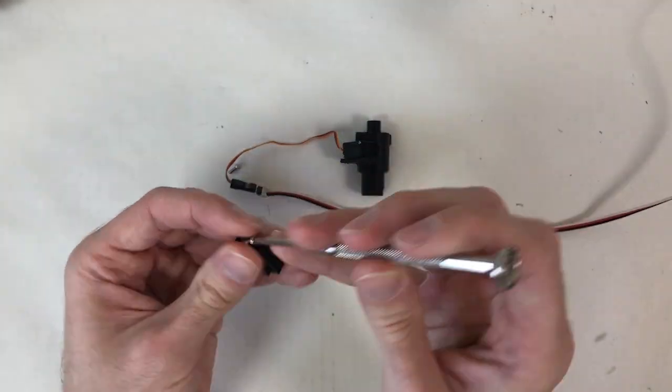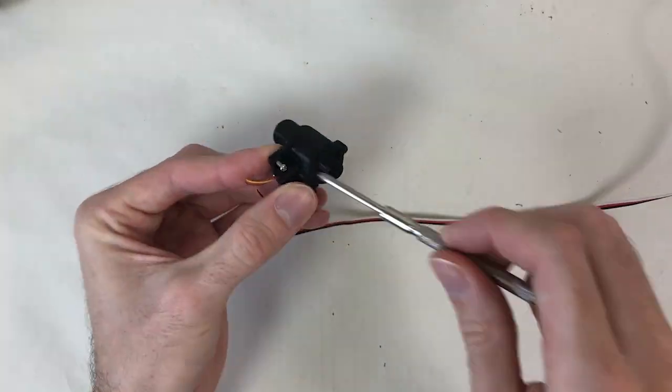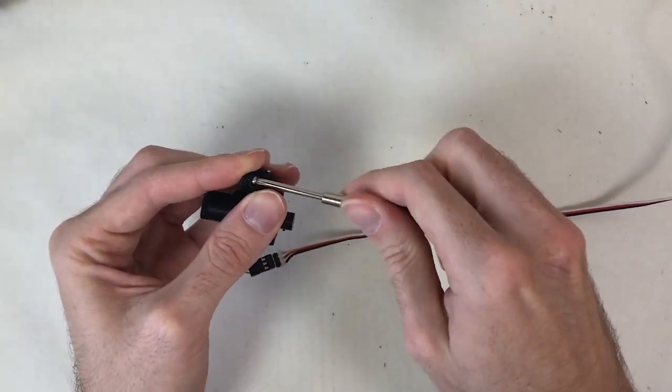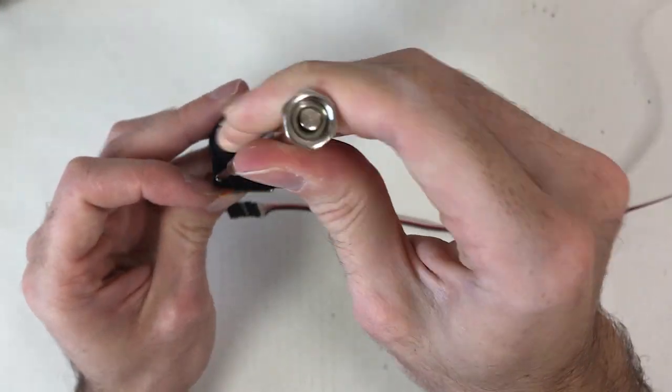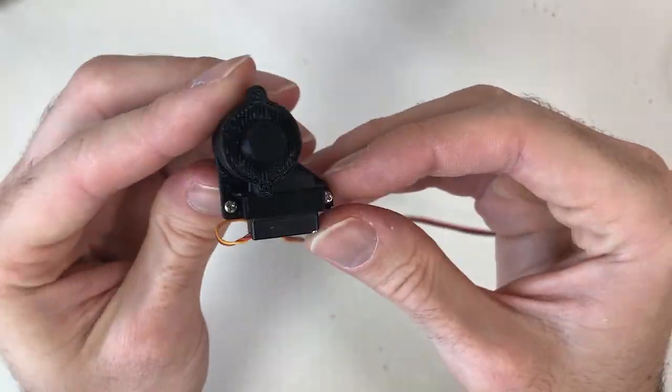Although servo motors usually come with tabs that have holes to bolt them to a mount plate, in many situations it is actually easier to use a bracket to secure the servo motor. And sometimes, I even cut out the tabs to make the servo motor even more compact.